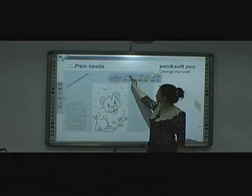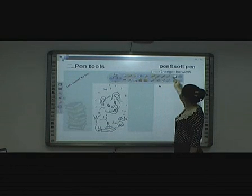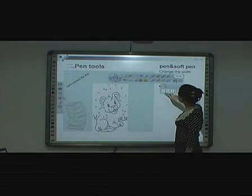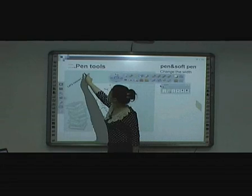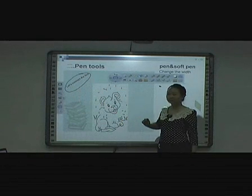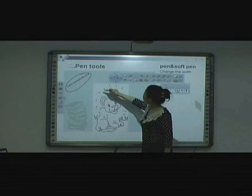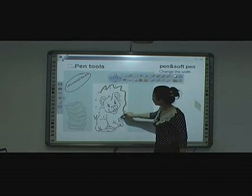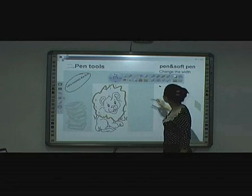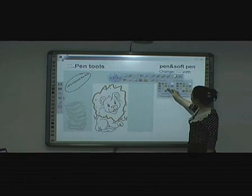Second, pen brush tool. Click the pen brush tool. There are 8 kinds of pen brush tool for selection. Choose pencil and soft paint. You can also change the thickness and color of the pen in the property menu.